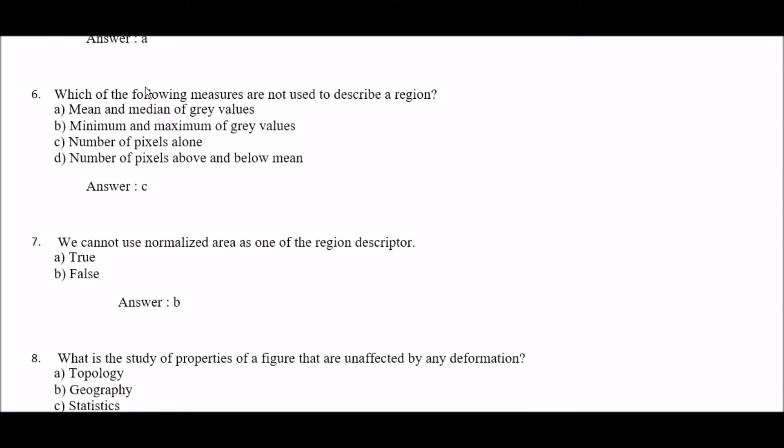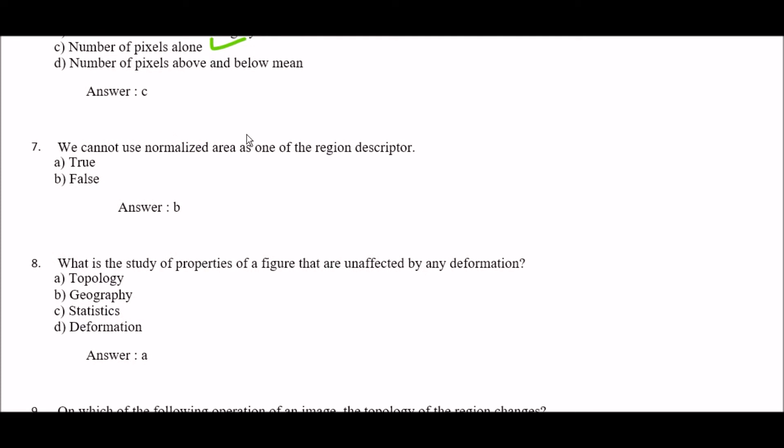Next question: which of the following measures are not used to describe a region? Option A: mean and median of gray values, option B: minimum and maximum of gray values, option C: number of pixels alone, option D: number of pixels above and below mean. The right answer is option C — number of pixels alone. Next: we cannot use normalized area as one of the descriptors — true or false? The answer is false.